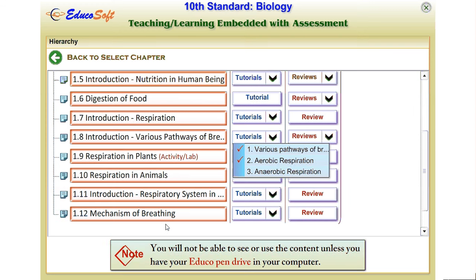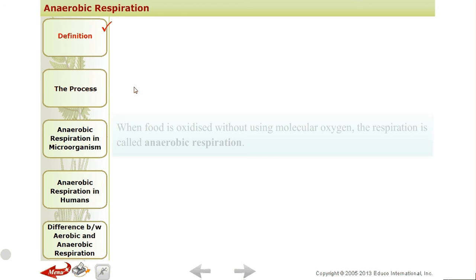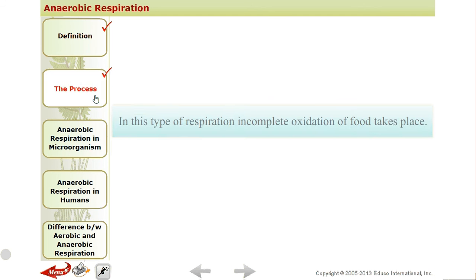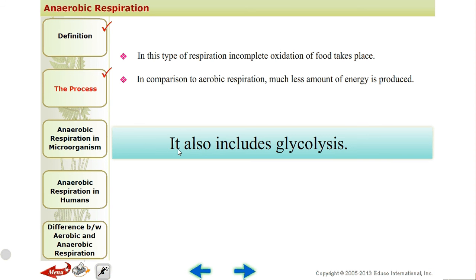Now we will see anaerobic respiration. Anaerobic means air is not available — meaning oxygen is not available. When food is oxidized without using molecular oxygen, the respiration is called anaerobic respiration. In this type of respiration, incomplete oxidation of food takes place. Compared to aerobic respiration, which generates 38 ATP, anaerobic produces much less energy. It also includes glycolysis, which is common to both aerobic and anaerobic respiration.